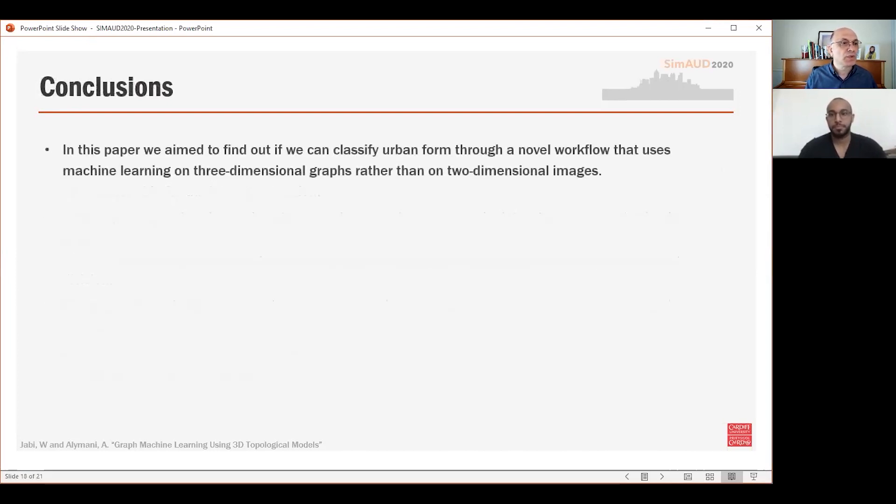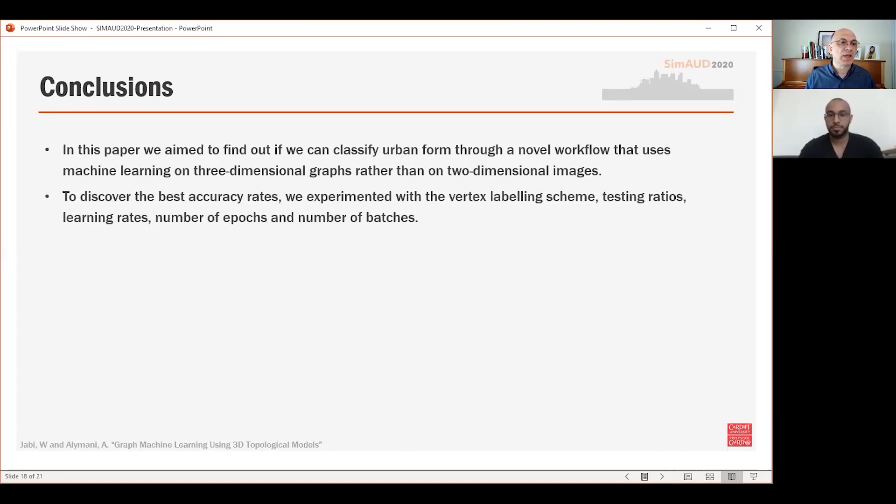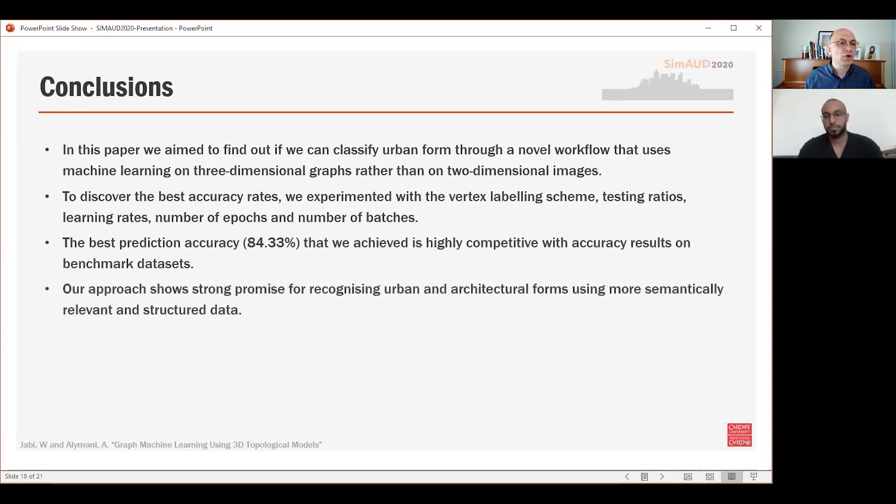Now, in terms of conclusions, we aimed first of all to find out if we can classify urban form through a novel workflow that uses machine learning on three-dimensional graphs rather than on two-dimensional images. To discover the best accuracy rates, we experimented with the vertex labeling scheme, testing ratios, learning rates, number of epochs, and number of batches. The best prediction accuracy, 84.33% that we achieved, is highly competitive with accuracy results on benchmark datasets. Our approach shows strong promise for recognizing urban and architectural forms using more semantically relevant and structured data.